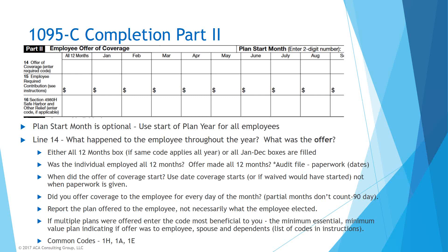Line 14 goes through what happened to the employee throughout the year — did they have an offer of coverage and what code applies. The most common codes are: 1H — no offer of coverage; 1A — minimum essential coverage, minimum value, affordable at the federal poverty level safe harbor, also offered to dependent children; 1E — same plan offered to employee, spouse, and dependents but the employee share exceeds 9.66% of the mainland federal poverty level, so you can't use 1A and must enter the actual dollar amount on line 15.